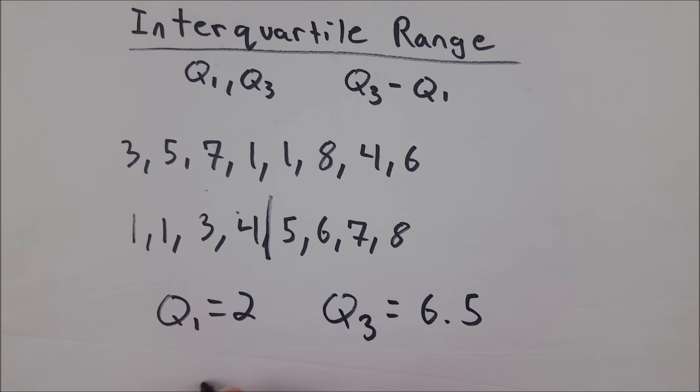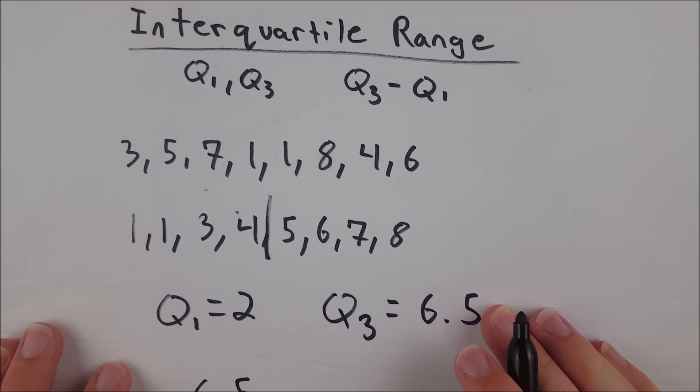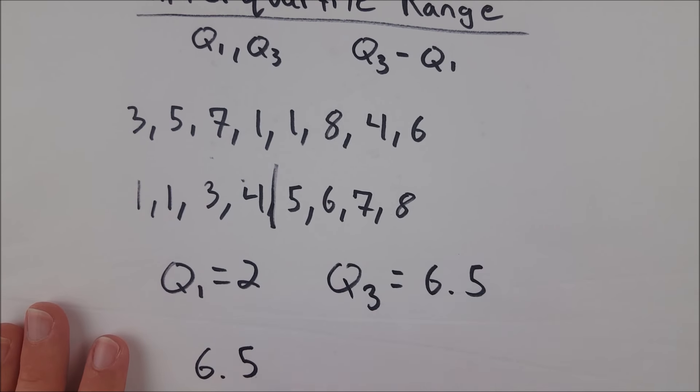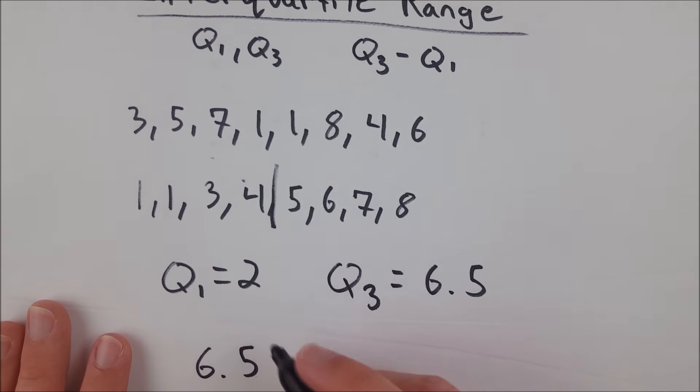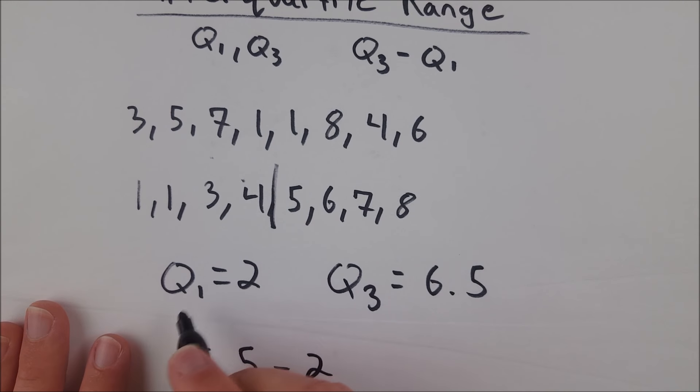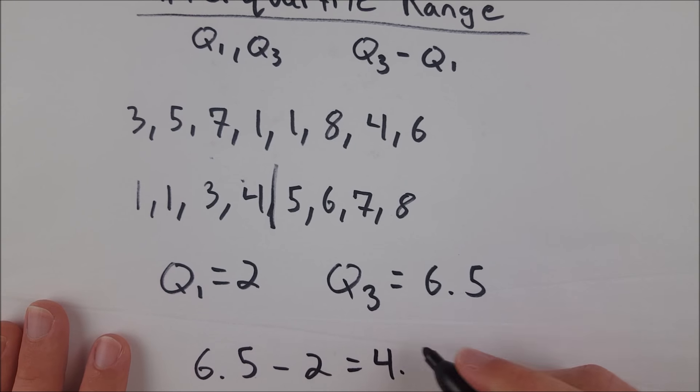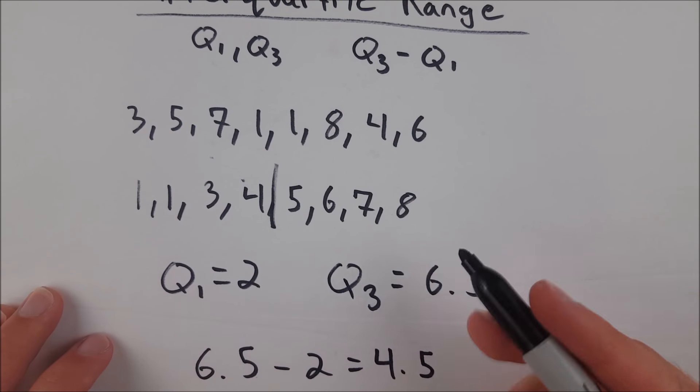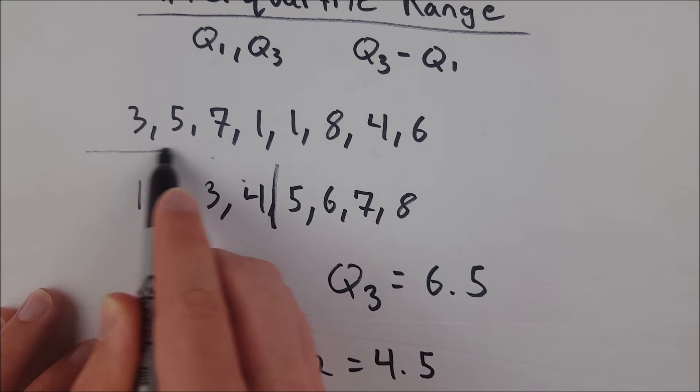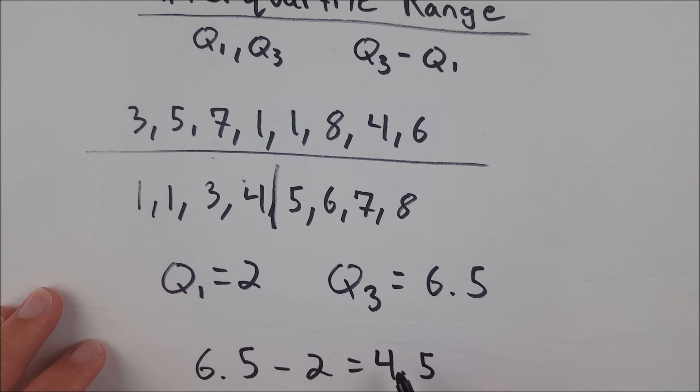So the interquartile range is 6.5, let me slide this up a little bit, that's the third quartile minus two, the first quartile, as you can see. And that's equal to 4.5. So our interquartile range for this hot dog eating contest is 4.5.